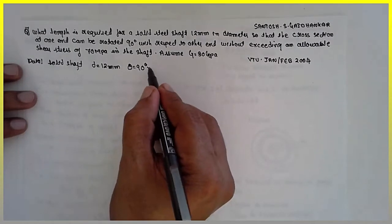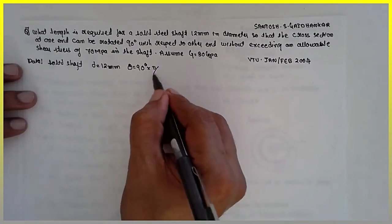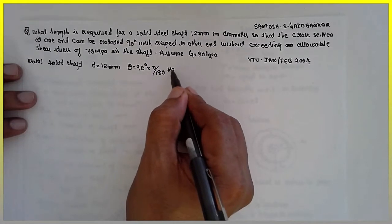We have to express theta in terms of radians, that is pi by 180, you will get it in terms of radians.